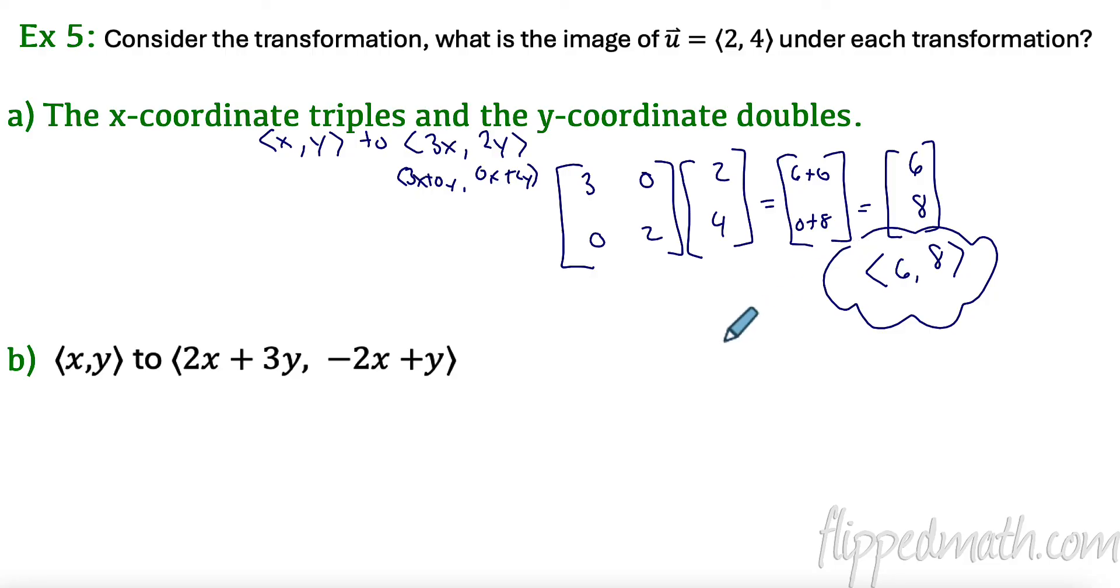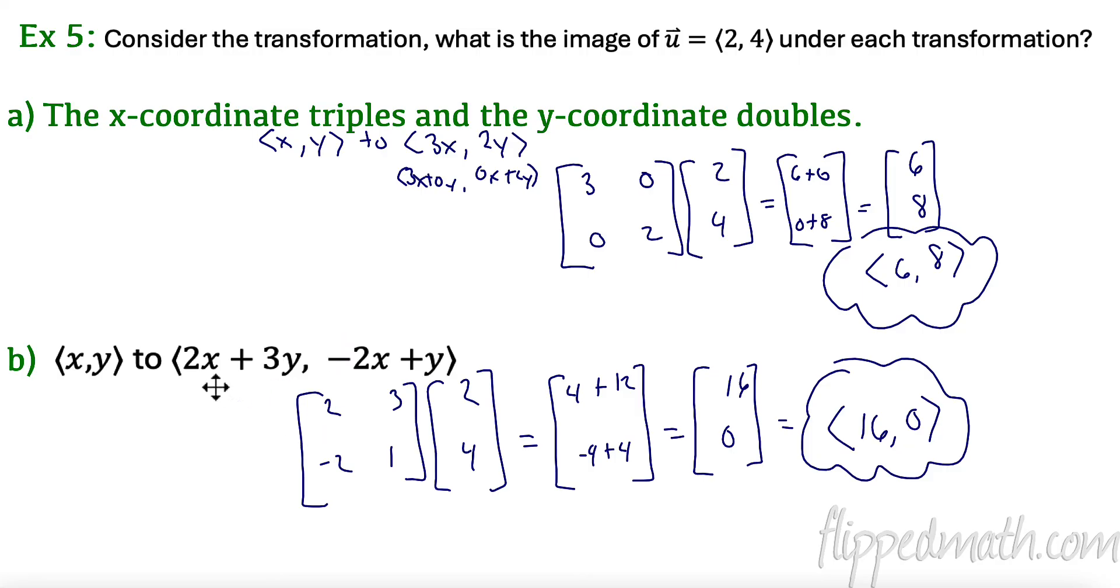So I want you to pause the video and try B all by yourself. Come up with the associated matrix, multiply it by your original vector, and what is your new transformed vector. So I have my transformation matrix here, two, three, negative two, one. I multiplied it by my vector, two, four. I got 16, zero, which is the new vector, new transformed vector of 16, zero.